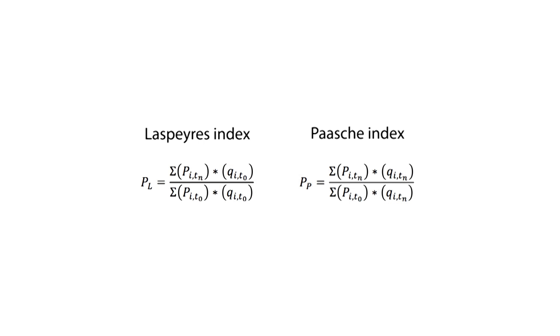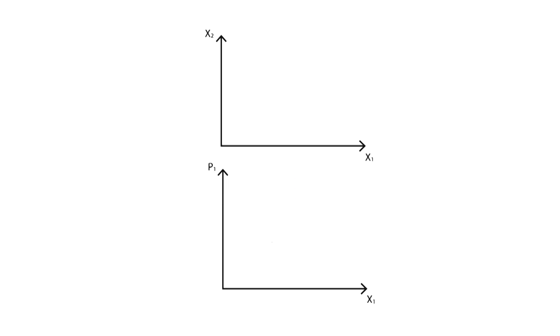In this video, we will focus on the Laspeyres Index. The graph at the top shows the quantities consumed of two goods, x1 on the horizontal axis and good x2 on the vertical axis. The lower graph shows the quantity of good x1 consumed on the horizontal axis and its price on the y-axis.